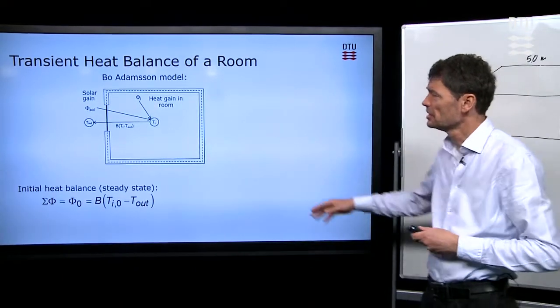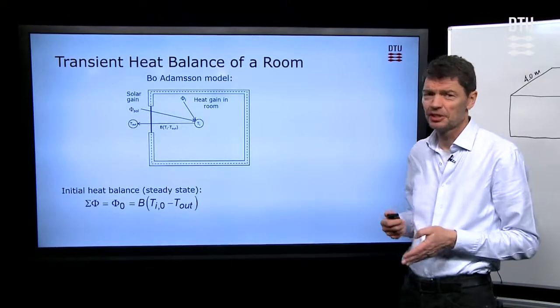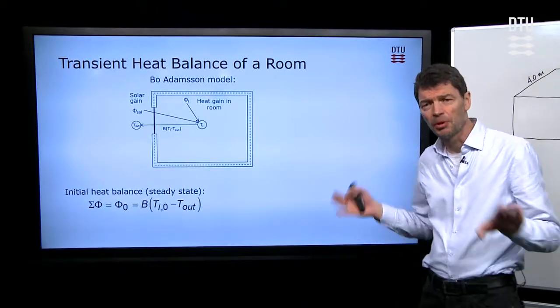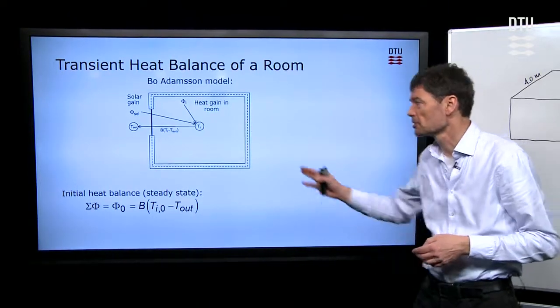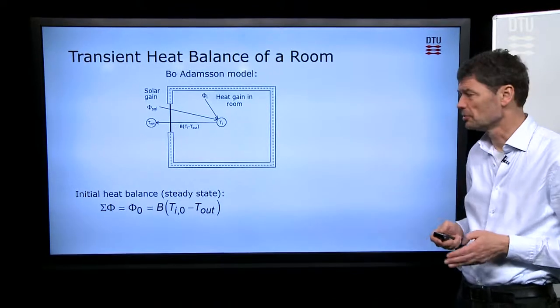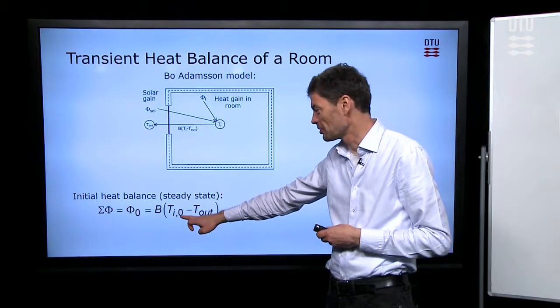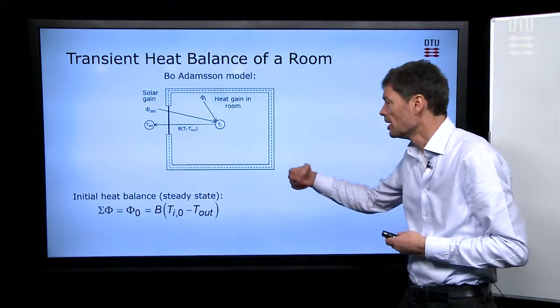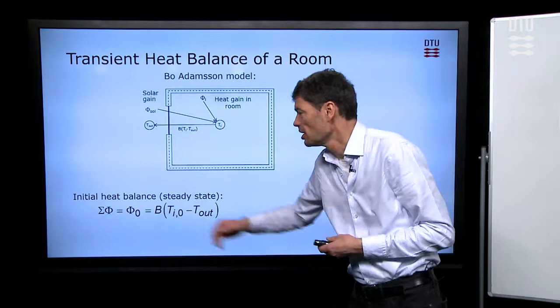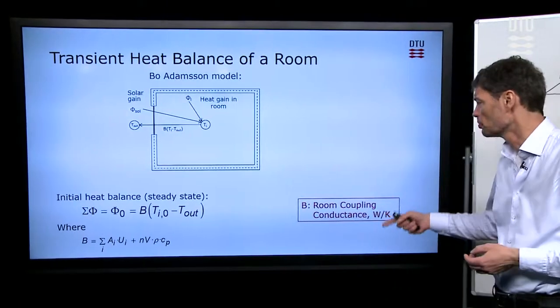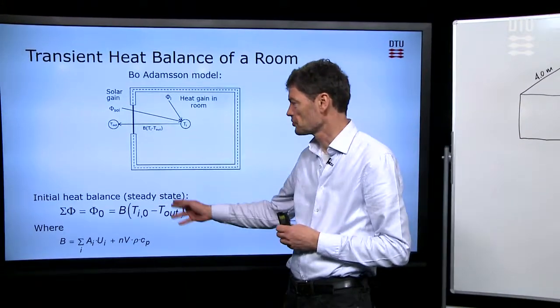What we'll talk about is the heat balance for a room that we have here on the picture. Initially we set up some things where the room is in thermal balance with heat supply, heat gains in the room, and also heat losses to the outside. This balance is expressed down here, that we have initially a temperature within the room at time zero, and we have another temperature outside of the room, and the difference between those two temperatures multiplied with a room coupling conductance, a coefficient that couples heat transfer between the room and the outside.